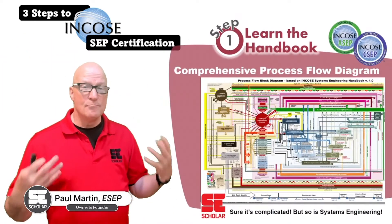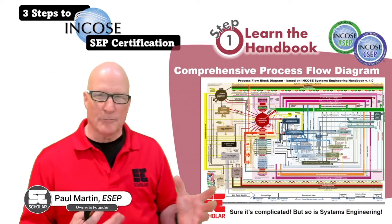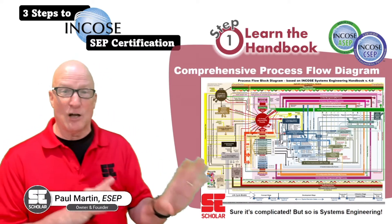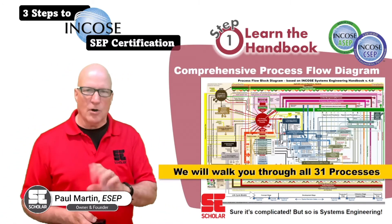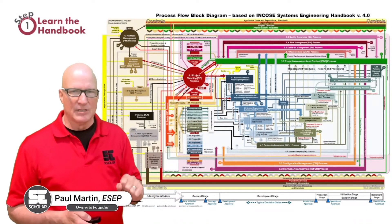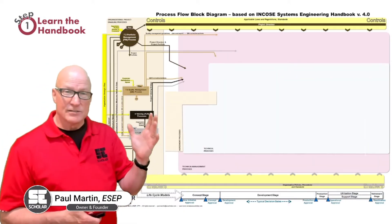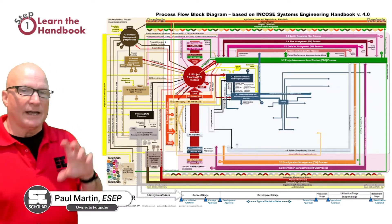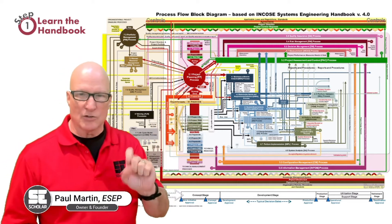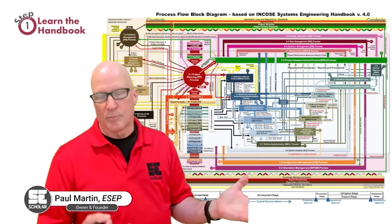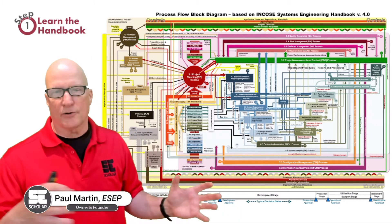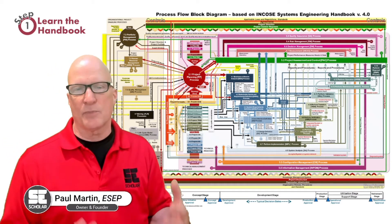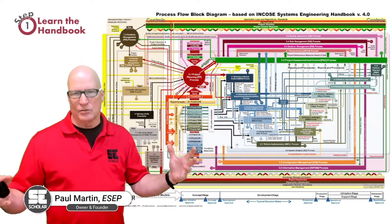I have a method for how I teach the course. I use a comprehensive process flow diagram. System engineering is complicated, but I walk you through all 31 processes one process at a time. I start with a blank slate, beginning with the life cycle model process and organizational processes, then agreement and technical management processes, ending with the technical processes and the disposal process. As you can see in the diagram, I show how they all interact with each other within the vast machinery of system engineering.